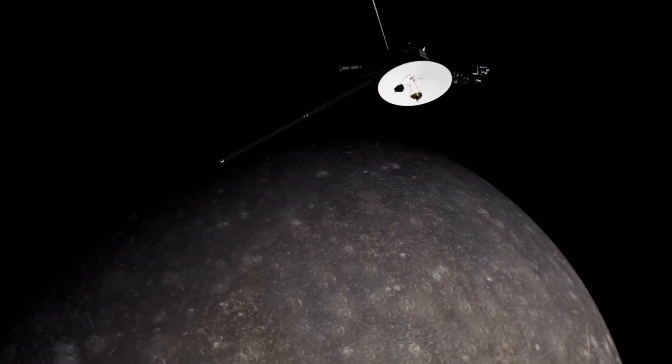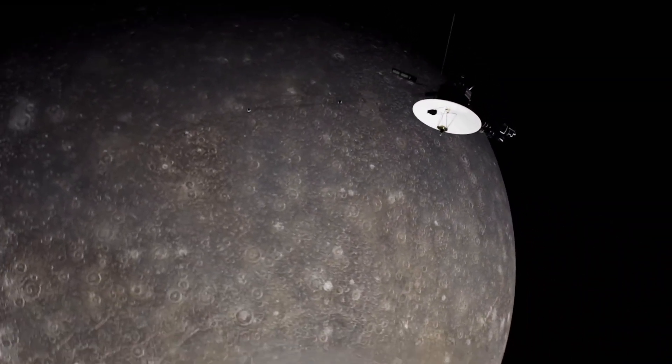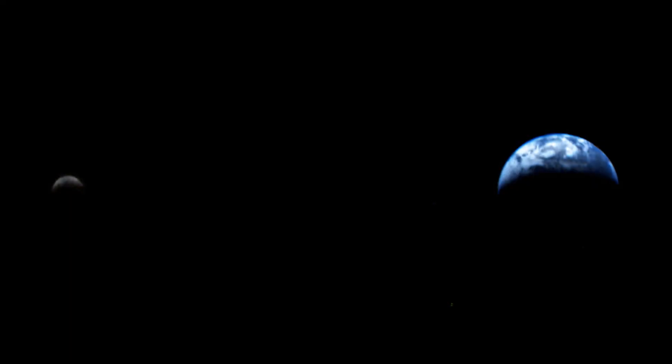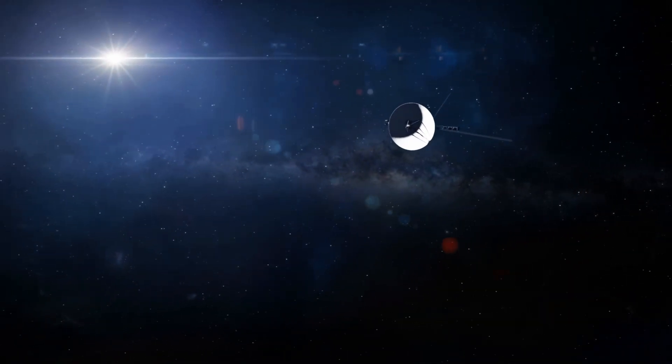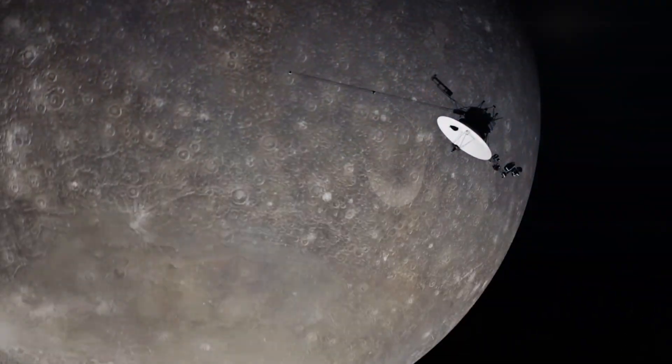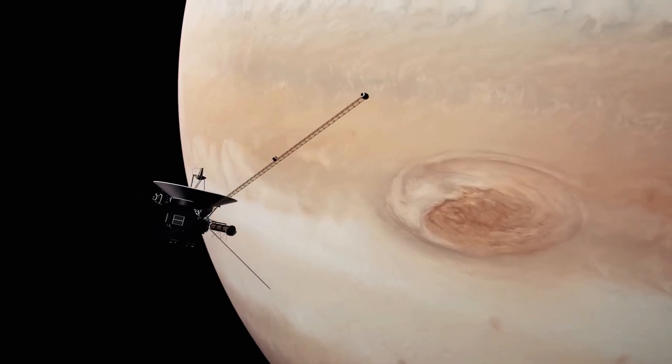After Saturn, the twins parted ways forever. Saturn's gravity propelled Voyager 1 onto a high-speed trajectory, making it the fastest spacecraft in history, while Voyager 2 continued its planetary odyssey.